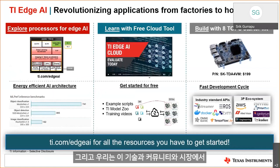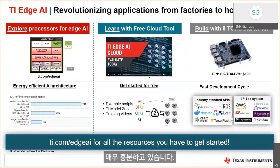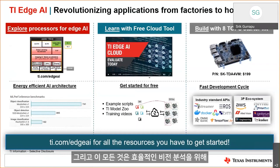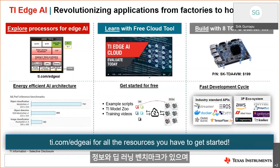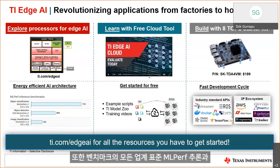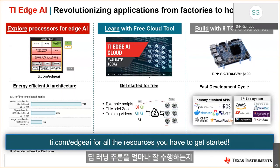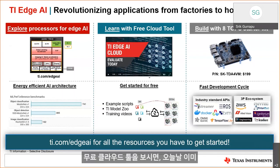TI AI applications are revolutionizing applications from factories to retail to home, and it all starts with our processor TDA4x — a very good combination of ARM processing engine, deep learning acceleration, and many other accelerators for imaging and video for efficient vision analytics. We have quite a bit of information about the processor and some deep learning benchmarks on ti.com/hji. You can compare with industry-side MLPerf inference benchmarking to see how well the TDA4 platform does deep learning inferencing in terms of very high energy efficiency.